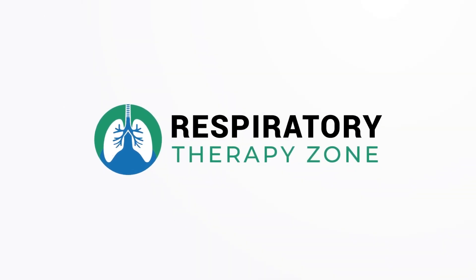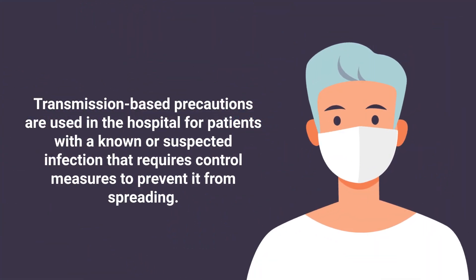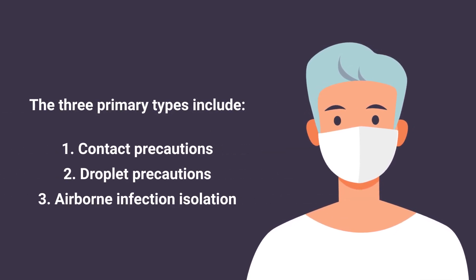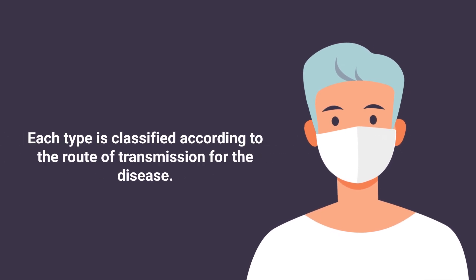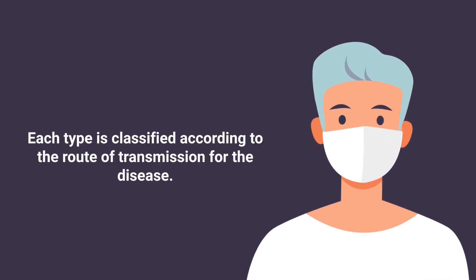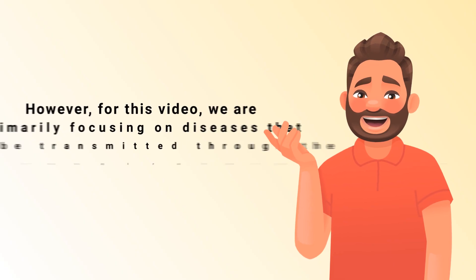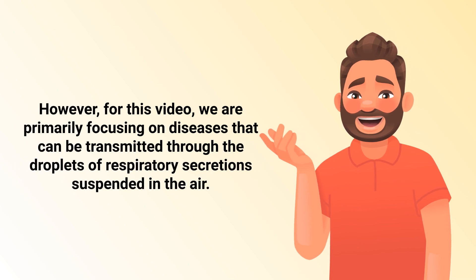Transmission-based precautions are used in the hospital for patients with a known or suspected infection that require control measures to prevent it from spreading. The three primary types include contact precautions, droplet precautions, and airborne infection isolation. Each type is classified according to the route of transmission for the disease.